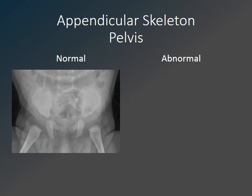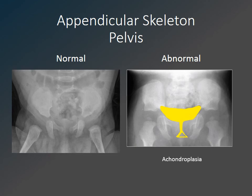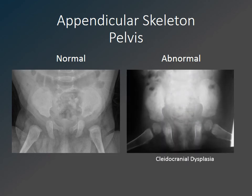When assessing the pelvis, look at the overall shape and morphology as well as the appearance of the hips and femoral epiphyses. In achondroplasia, characteristic abnormal pelvic findings include squared iliac wings, very flat acetabular roofs with a short narrow sciatic notch, and what has been described as a champagne glass appearance of the pelvic inlet — referring to an old-fashioned coupe glass. In cleidocranial dysplasia, absent pubic bone ossification is a characteristic finding.